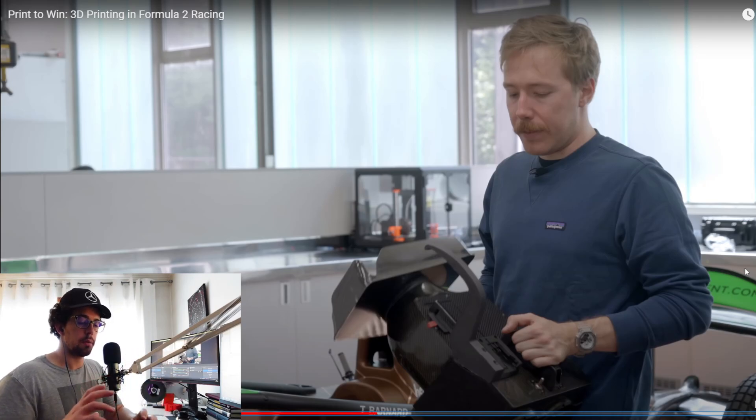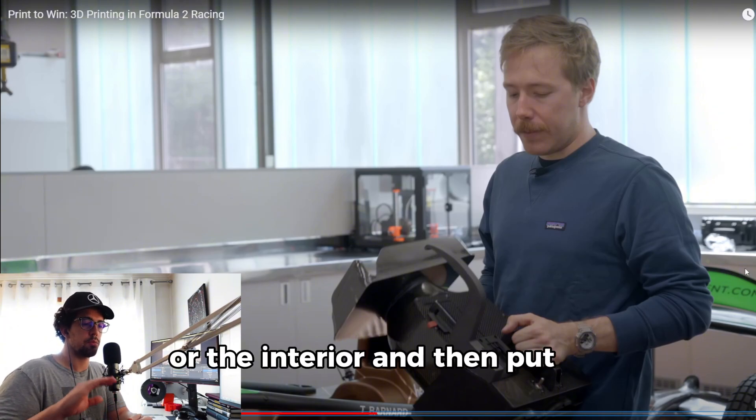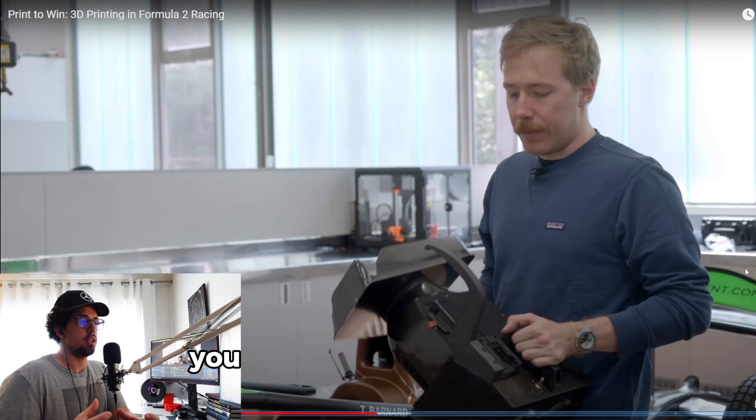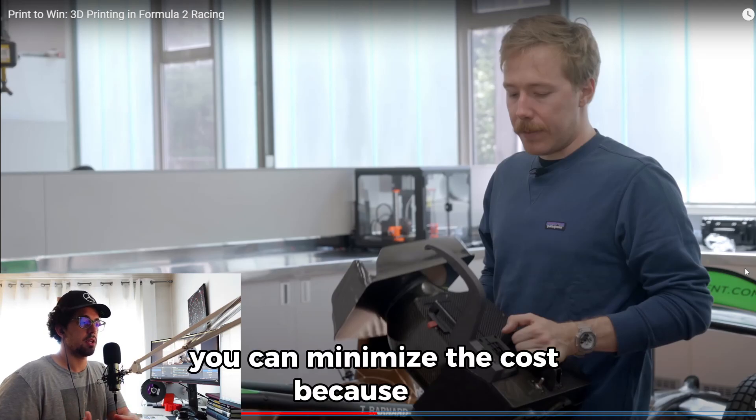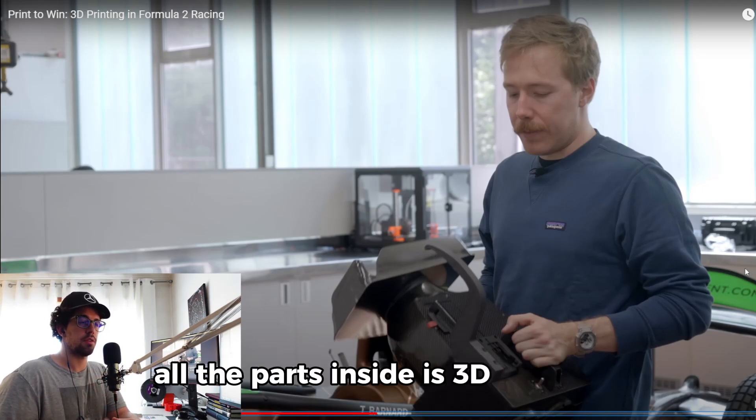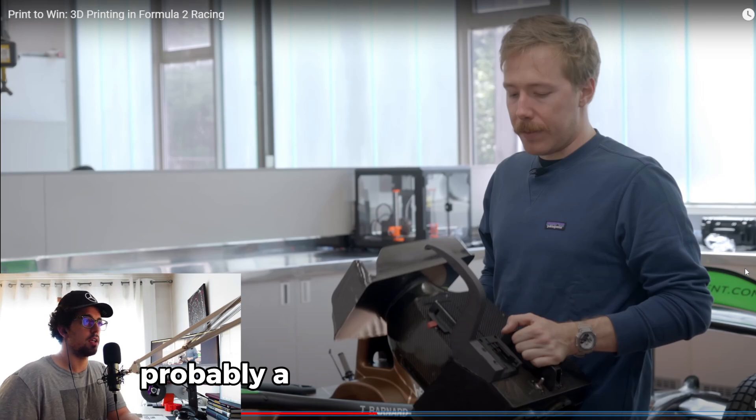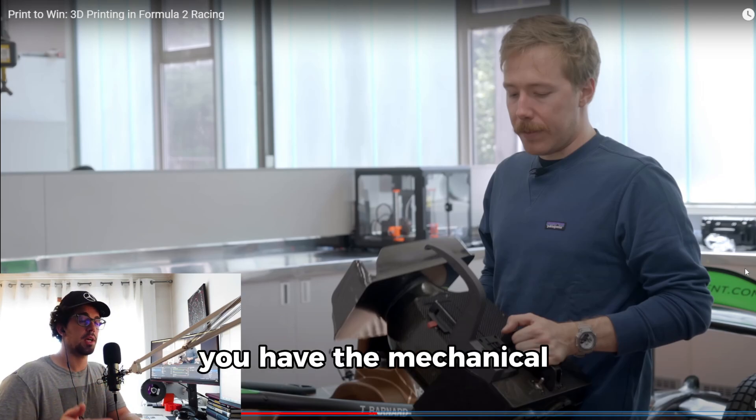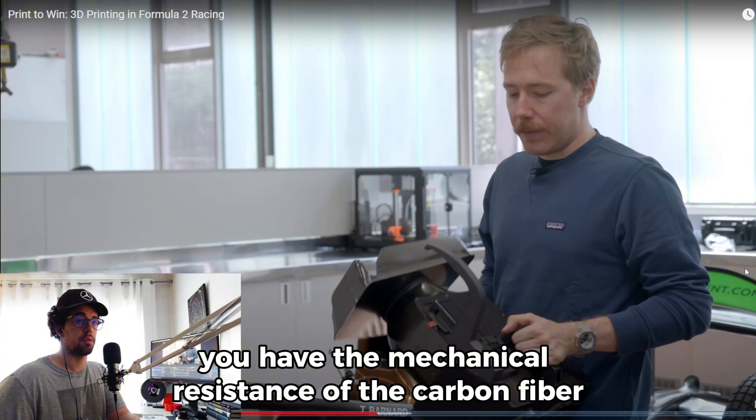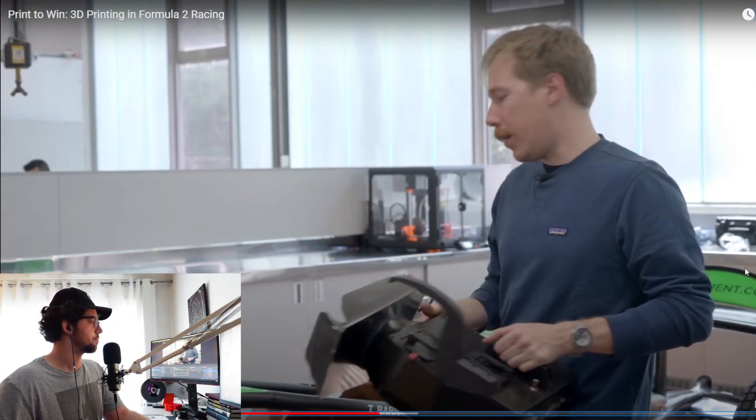So right now people are printing the shell, if you may, or the interior, and then put a shell of carbon fiber. You can minimize the cost because all the part inside is 3D printed, probably a heat resistant filament. You have the mechanical resistance of the carbon fiber on the outside. That is used to cool our car.